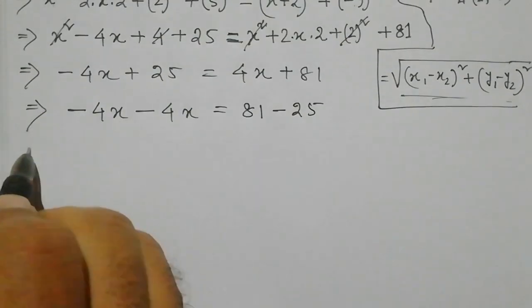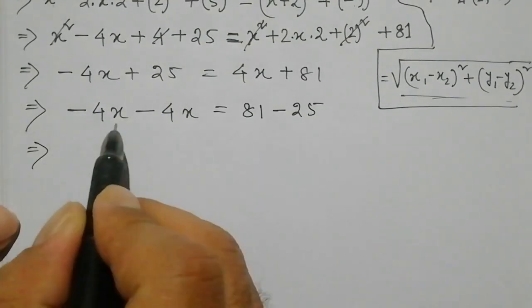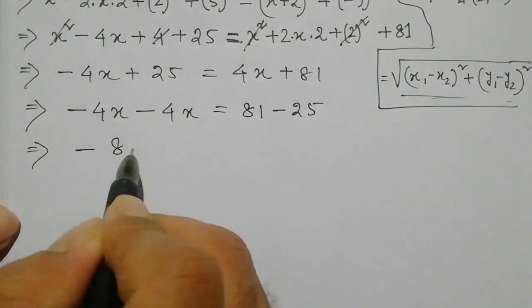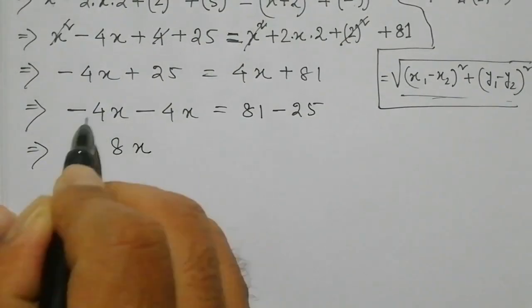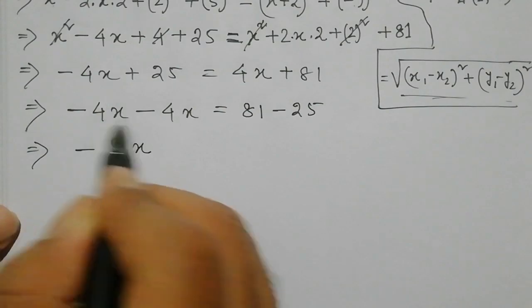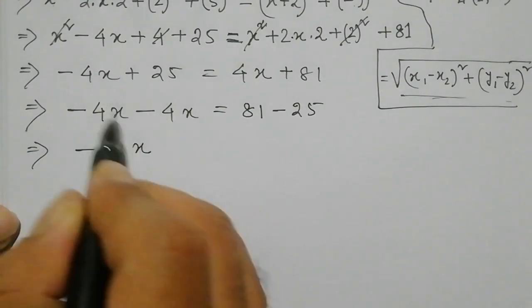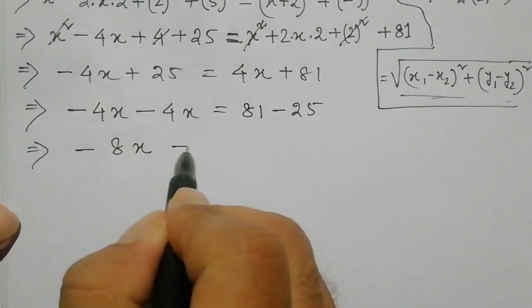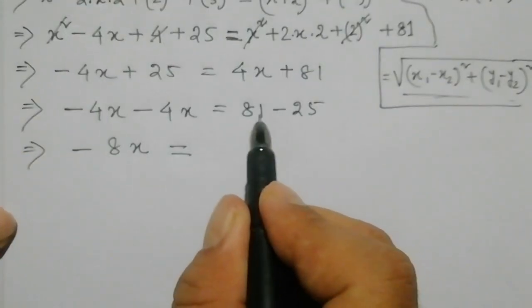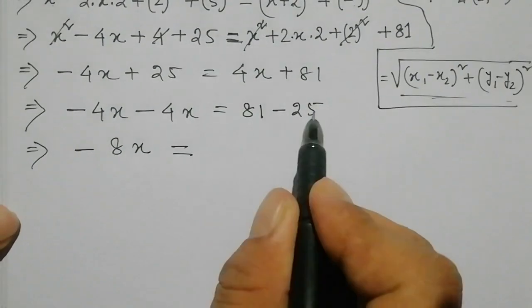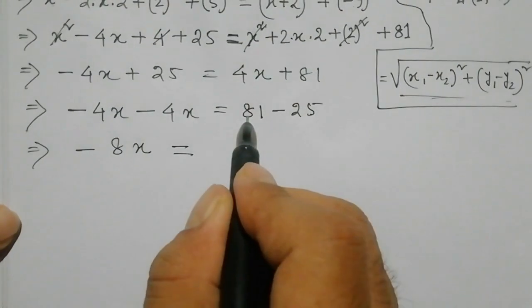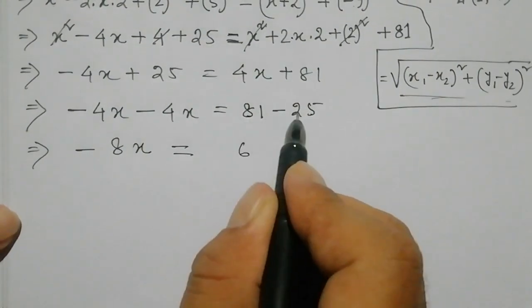Okay. So what do I get here? That gives minus 8x total: 4x minus 4x, minus total 8x. Then 8x — subtracting from above — 11 minus 5 equals 6. So what is that? 7.